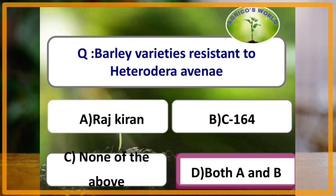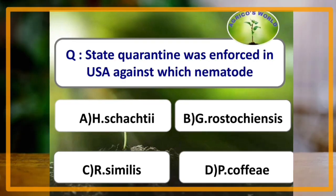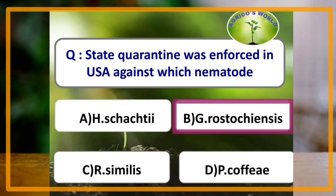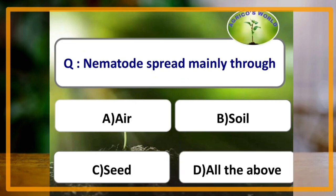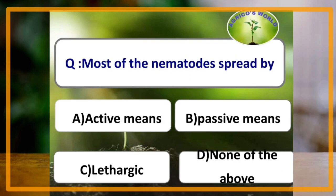State quarantine was enforced in USA against Globodera rostochiensis. In India there is a quarantine act against Globodera rostochiensis as well. Nematodes spread mainly through air, soil, and seed.